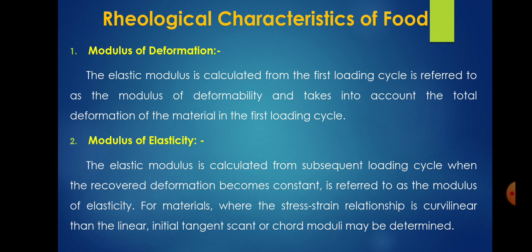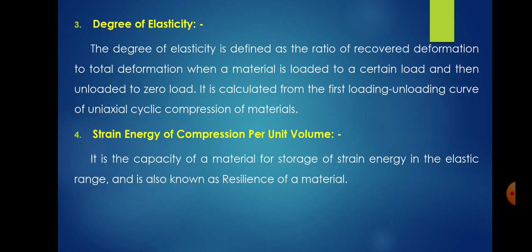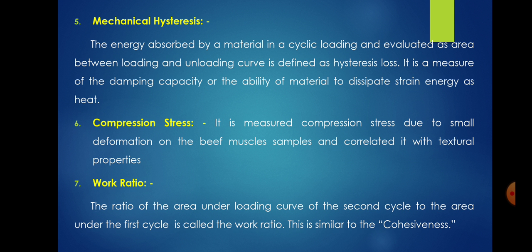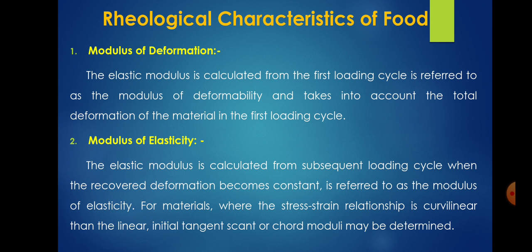There are various rheological characteristics of biological materials, such as modulus of deformation, modulus of elasticity, degree of elasticity, strain energy of compression per unit volume, mechanical hysteresis, compression stress, and work ratio. These rheological characteristics of biological materials play an important role while experimenting or analyzing the material under applied load. The modulus of deformability, or modulus of deformation, is the elastic modulus calculated from the first loading cycle and takes into account the total deformation of the material in that cycle.